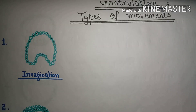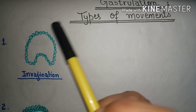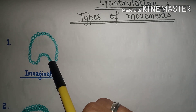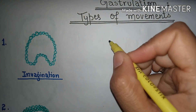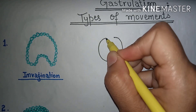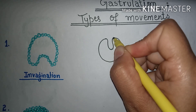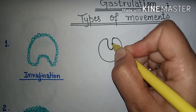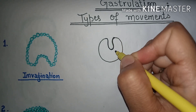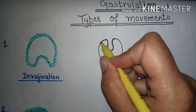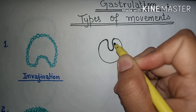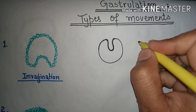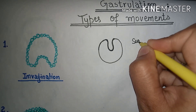The first cell movement is known as invagination. In invagination, an embryo gets folded inside and forms a port-like or U-shaped structure. For example, think of a balloon — when we push pressure from the upside, it moves downward and gets inside. This formation of a U-shaped or pot-like structure is known as invagination, and it occurs in the sea urchin endoderm.